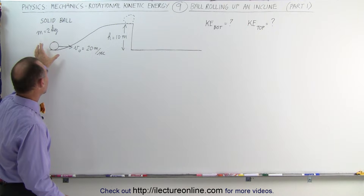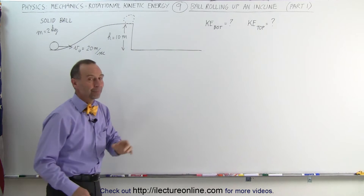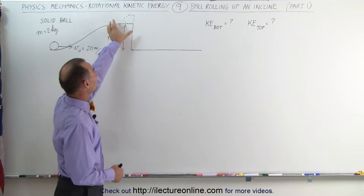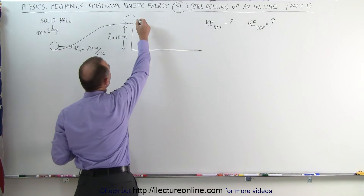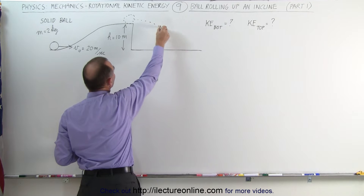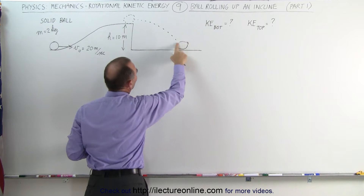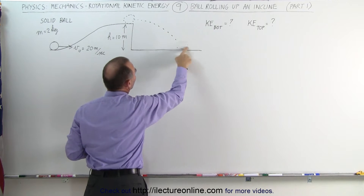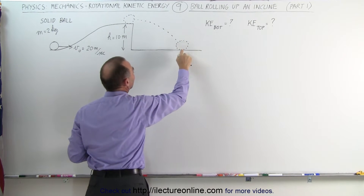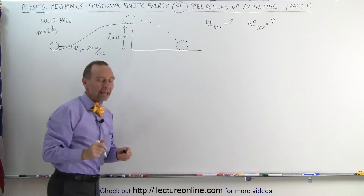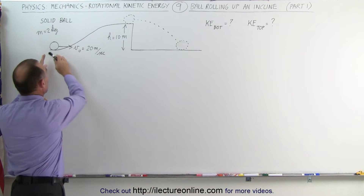We're going to determine the energy down at the bottom of the hill and the energy at the top of the hill. In part 2, we're going to determine the velocity at the top of the hill, and then the ball is going to continue off the cliff and land at the bottom. And then we're going to determine the kinetic energy at the bottom and compare it to the initial energy.